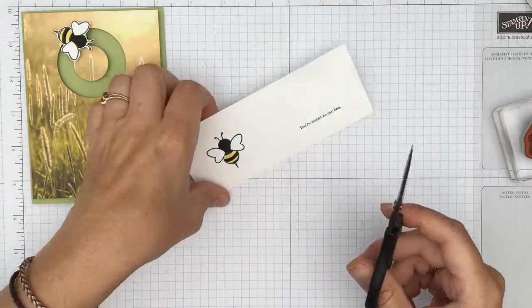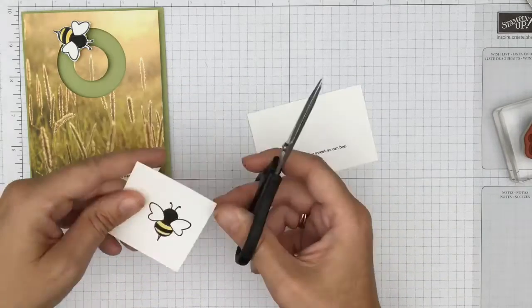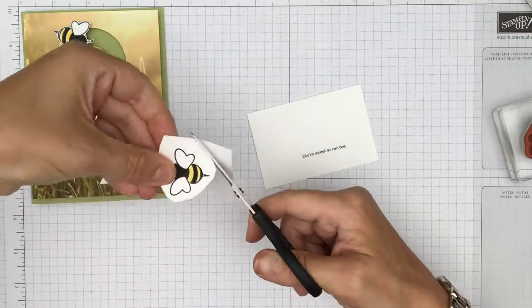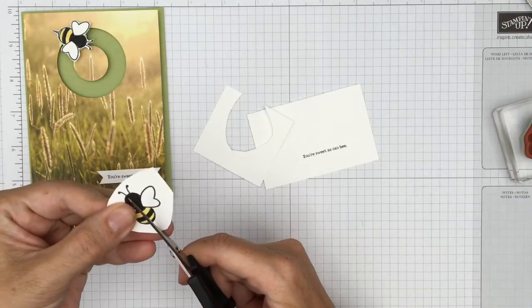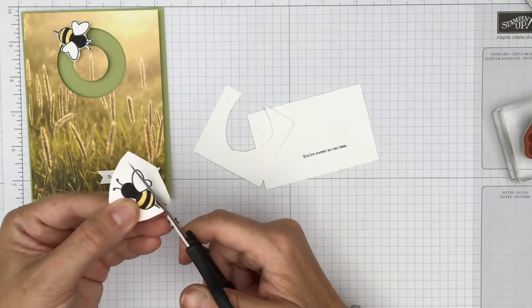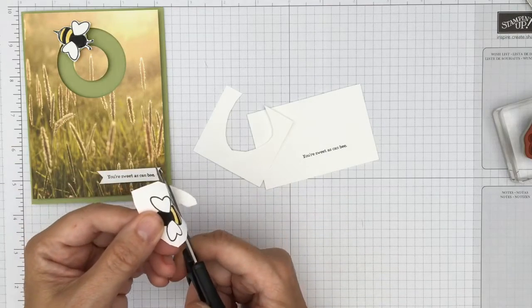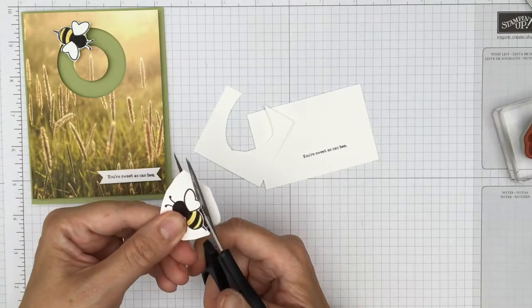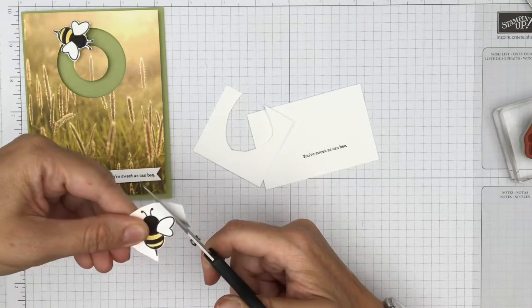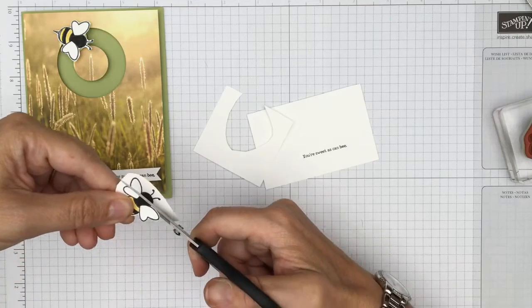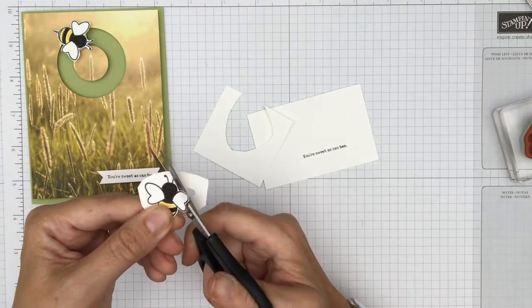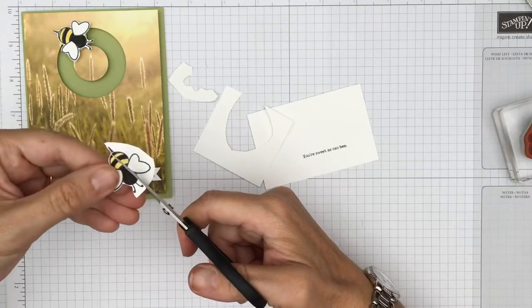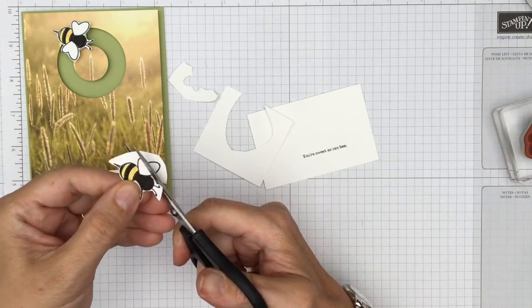Next, what we're going to do is, because we don't have the framelits, because not all of us have a Big Shot, we're just going to simply cut this little guy out. Now, I thought this would take ages, but it actually doesn't. I'm not going straight to the edge and cutting along the edge, because I think if you have a little bit of a wobble, then it makes it look not very good at all. I mean, it's not perfect, but you know, it's just perfectly adequate though. You don't necessarily need framelits all the time.